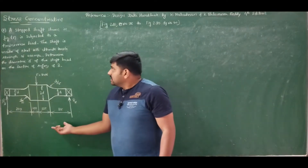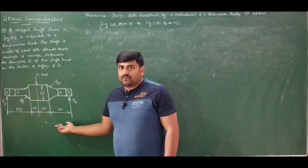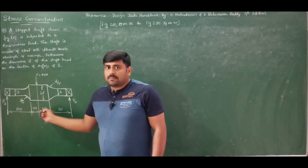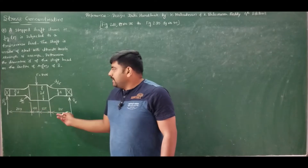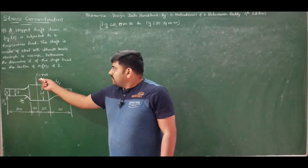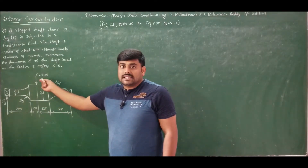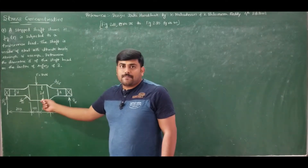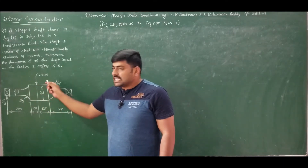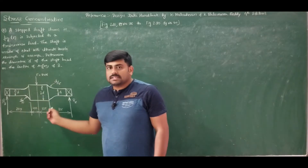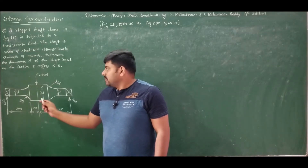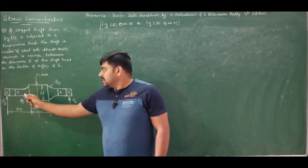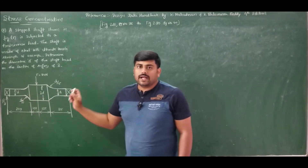This is the sketch, figure 8. If you carefully observe, it is a simply supported beam having supports A and B, loaded with a force F of 8 kN eccentrically — not exactly at the center. If it were loaded exactly at the center, the support reactions would both be F/2.